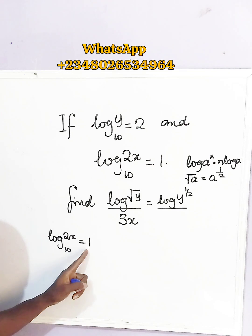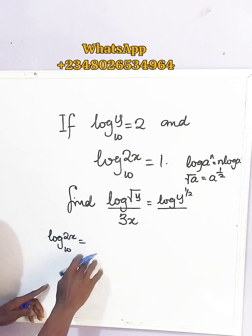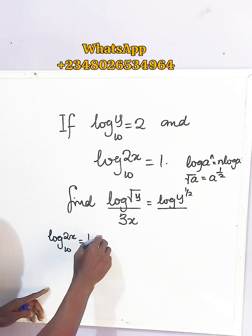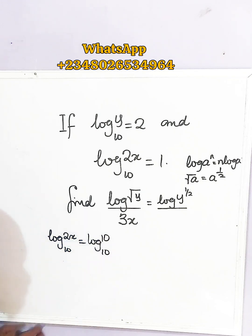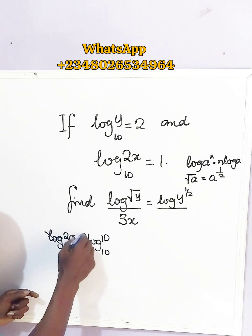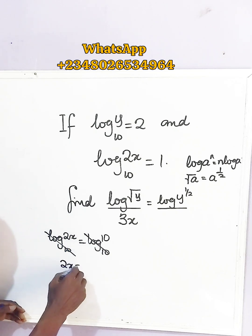Now since this is 1, and we have a base of 10, let us transform this to log 10 base 10. So since we now have the same base, we can eliminate. We end up having 2x equals 10.